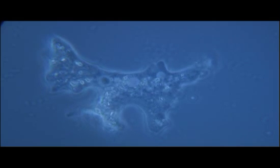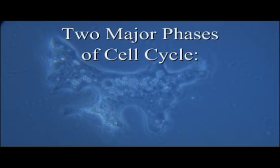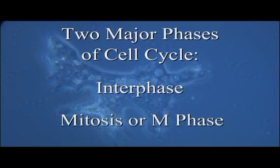The cell cycle of eukaryotic cells, which is typically much longer than that of prokaryotic cells, is divided into two major phases: interphase and mitosis, or the M phase.